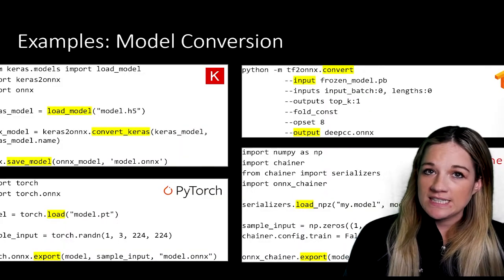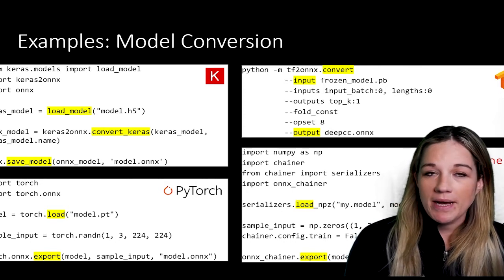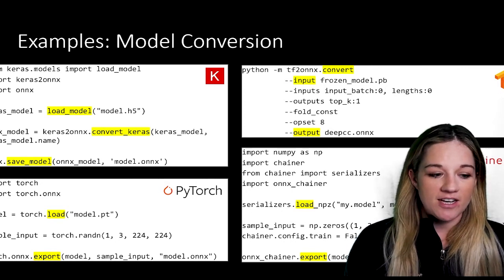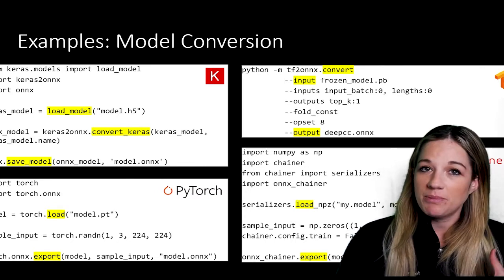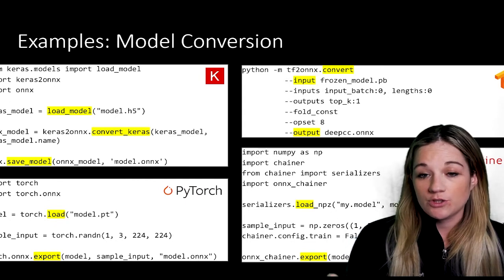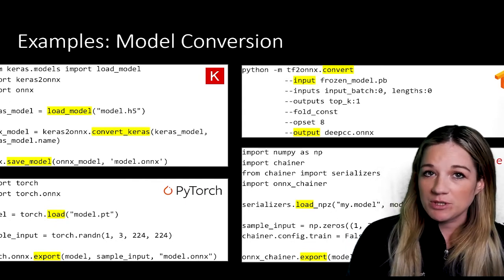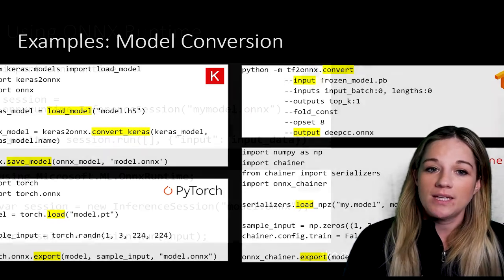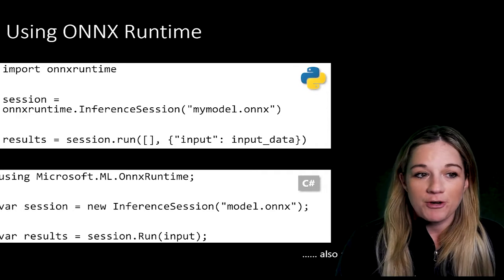In order to convert an existing model, you can do that quite simply by downloading one of the libraries — for example, Keras to ONNX, Torch.ONNX (ONNX is actually built directly into PyTorch), or TF to ONNX. Those are a few ways you can take existing machine learning models that you've trained, convert them to ONNX, and leverage the benefits of using ONNX Runtime for inferencing.